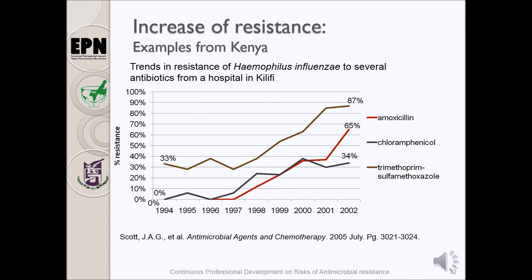There are global reports of increasing resistance to various antimicrobial agents. Some examples from Kenya indicate an increased trend of resistance to commonly used and affordable antimicrobial agents. Taking the example of amoxicillin, one of the most widely used antimicrobial agents in Kenya, which had recorded minimal resistance — almost zero percent — in 1996, but by the year 2002, resistance had risen to levels of 65 percent.